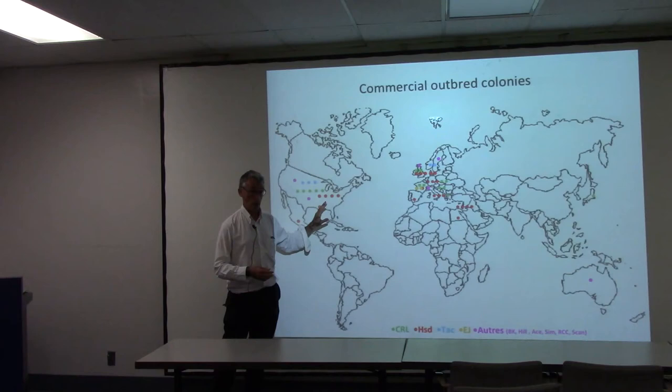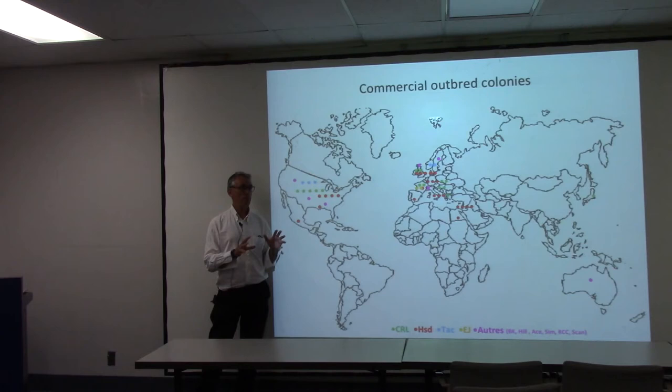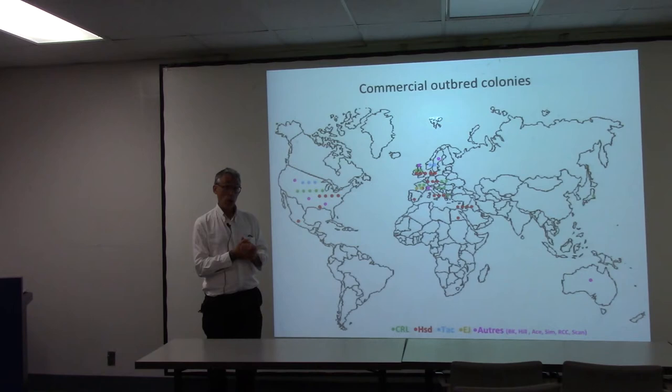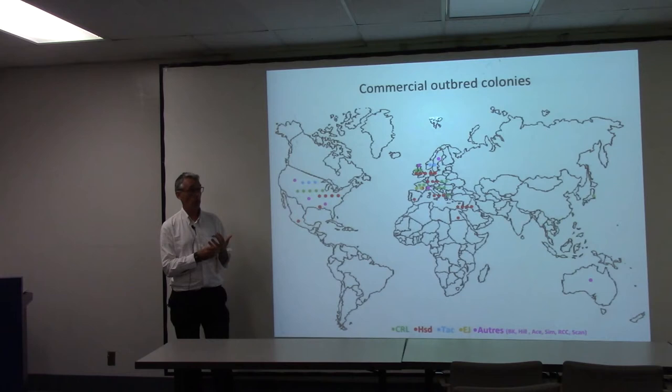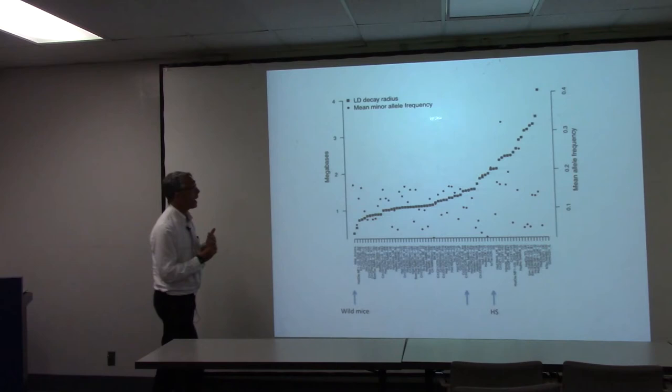We took about a hundred of these populations and asked: what is the mapping resolution? The first problem was that I couldn't find a well-worked-out measure for mapping resolution. How do you know you're going to get good mapping resolution? We decided to use a measure of linkage disequilibrium decay — the genetic correlation decay. We'd ask: within what distance do we get a decay of half? We call that our LD decay radius.